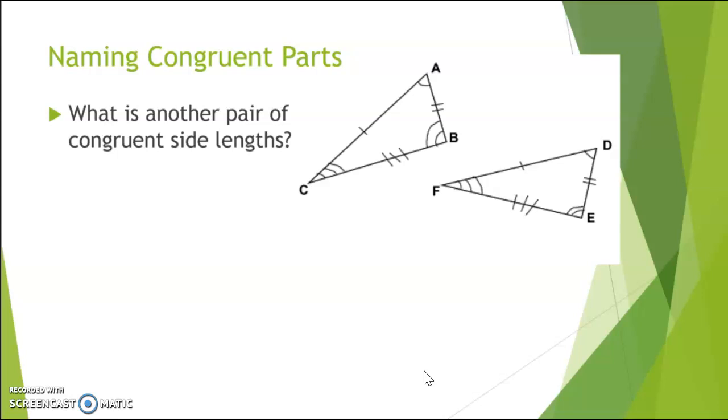What is another pair of congruent side lengths? Good. Make sure you match up those letters. And so AB has two markings, and in the other triangle, DE has two markings. You could also flip-flop these letters around, and it would mean the same thing. So the side BA would be congruent to the side ED, and that would be acceptable as well.